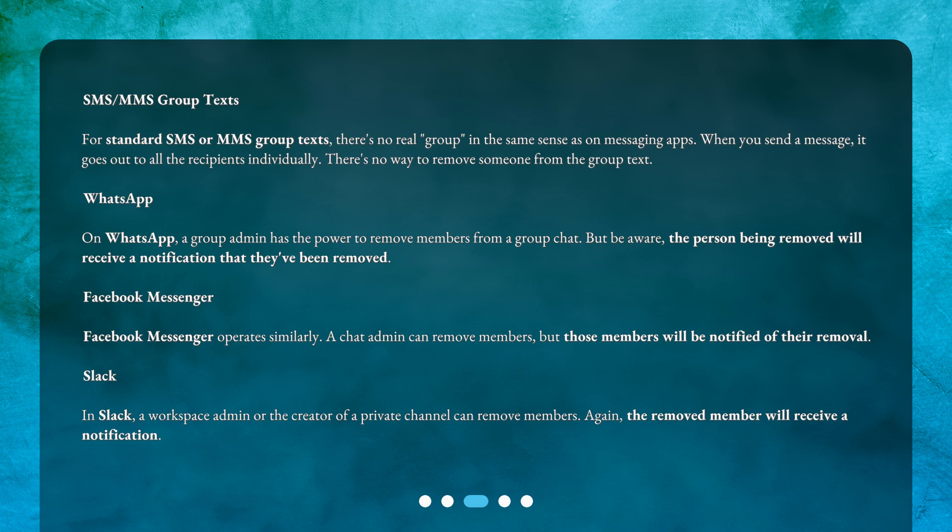On WhatsApp, a group admin has the power to remove members from a group chat. But be aware, the person being removed will receive a notification that they've been removed. Facebook Messenger operates similarly — a chat admin can remove members, but those members will be notified of their removal. In Slack, a workspace admin or the creator of a private channel can remove members, and again, the removed member will receive a notification.